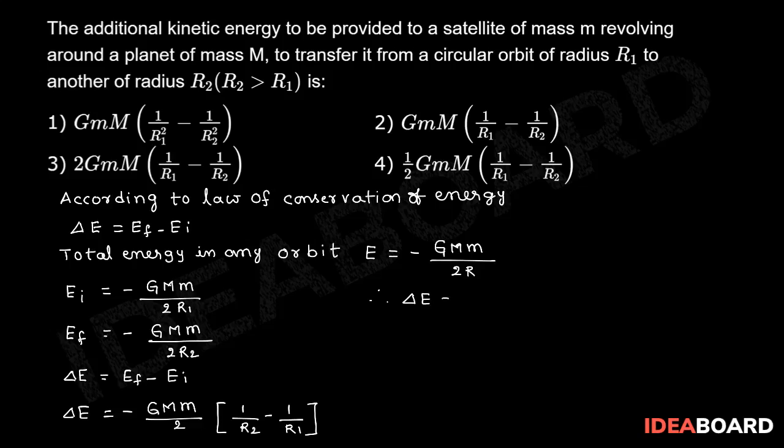Therefore, delta E is equal to minus one-half GMm into 1 by R1 minus 1 by R2.